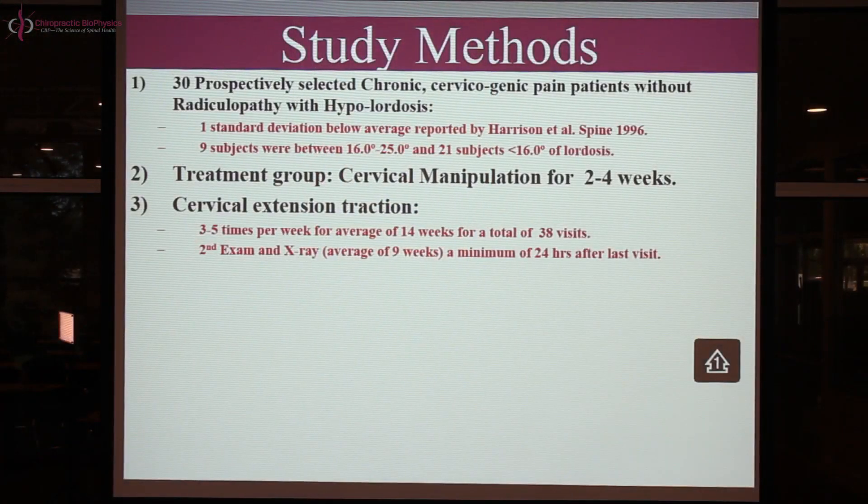We also did cervical extension two-way traction, applied every single day for a total of 38 sessions over 14 weeks — almost three times a week. In the treatment group, we also did warm-up extension exercises into their active range of motion. So in the first two to four weeks, every subject got chiropractic spinal manipulative therapy to the cervical spine, cervical warm-up extension exercises, and this new type of traction every visit.